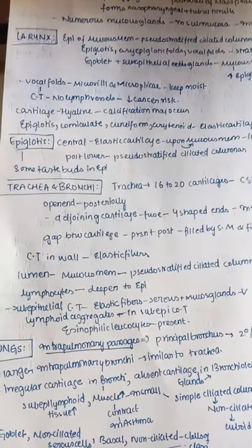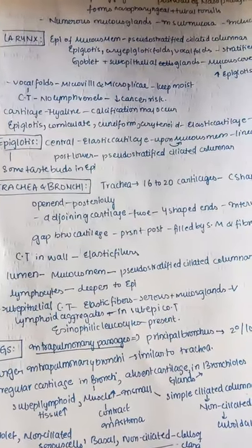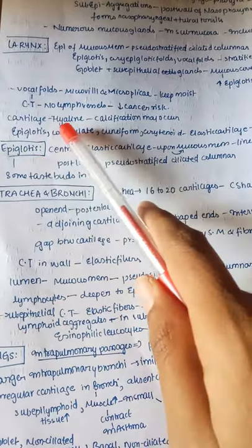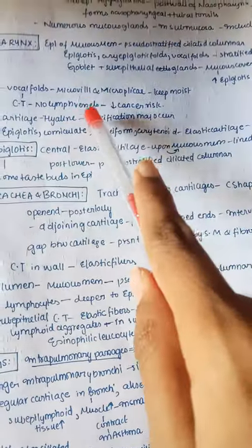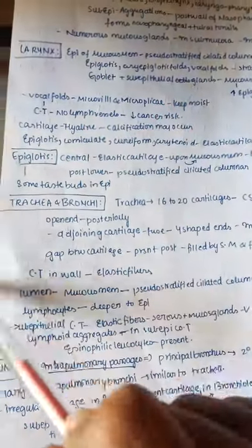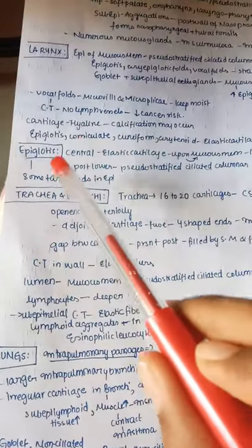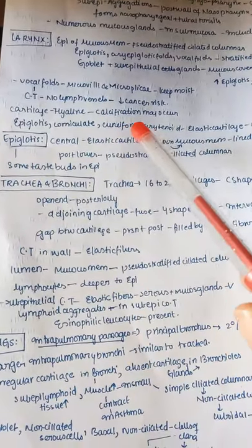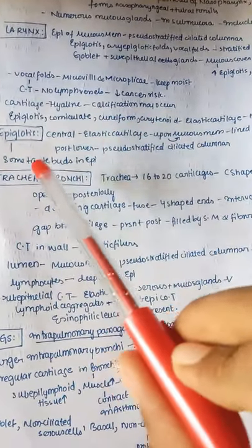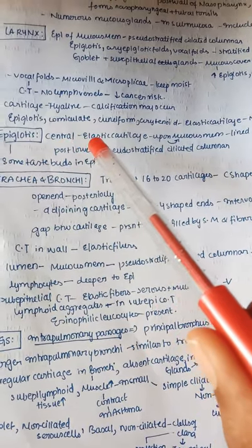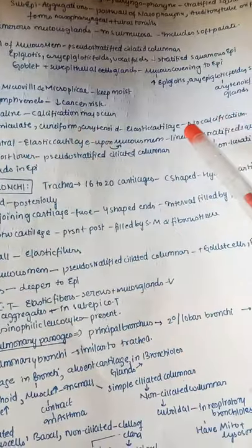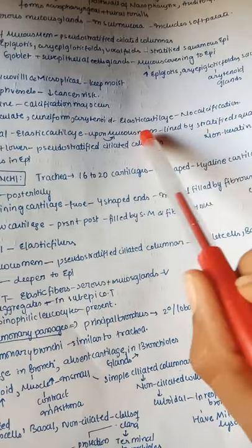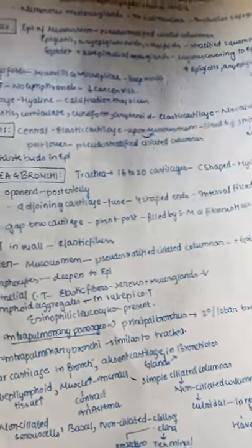The vocal folds have microvilli and microplicae which keep them moist. The vocal folds consist of connective tissue and have no lymphatic vessels, so there is less chance of getting cancer in the larynx. The cartilage is mainly of hyaline type and calcification may occur. The epiglottis, cuneiform, arytenoid, and corniculate are elastic cartilages with no calcification, because elastic cartilage does not calcify, whereas hyaline cartilage may.